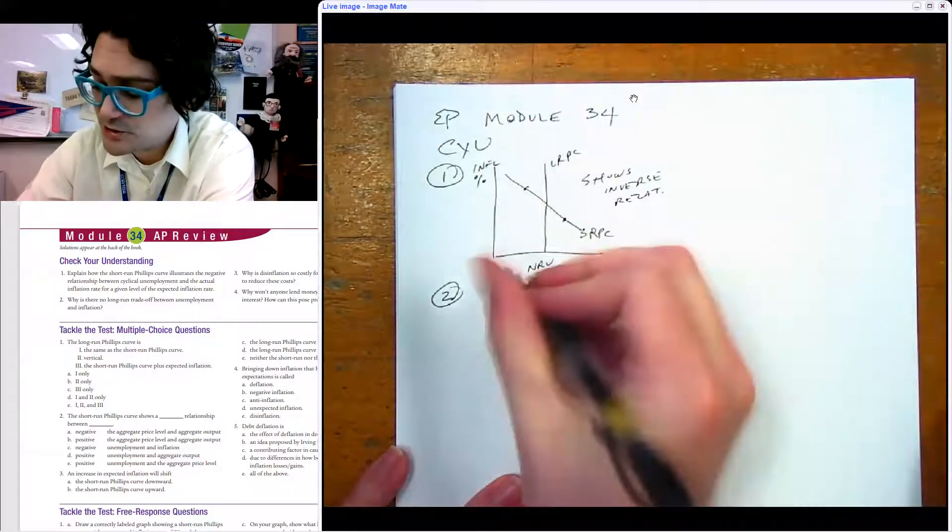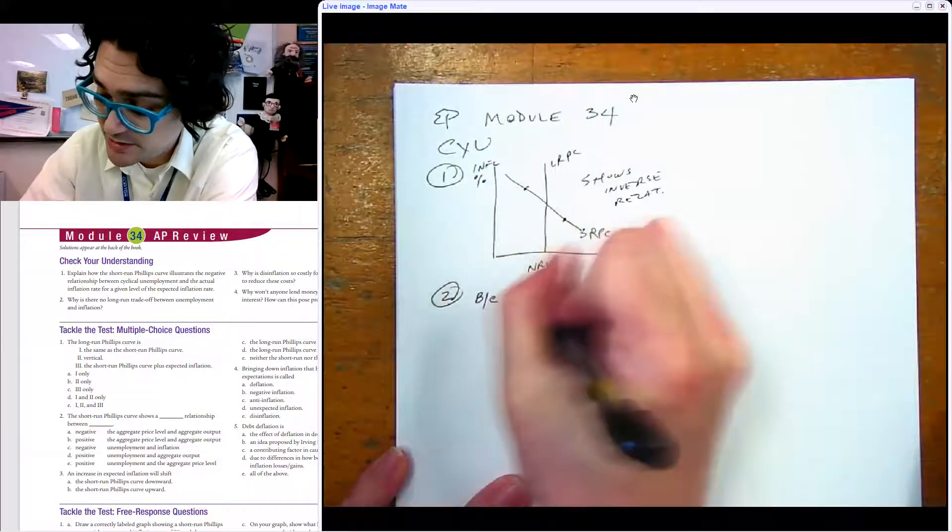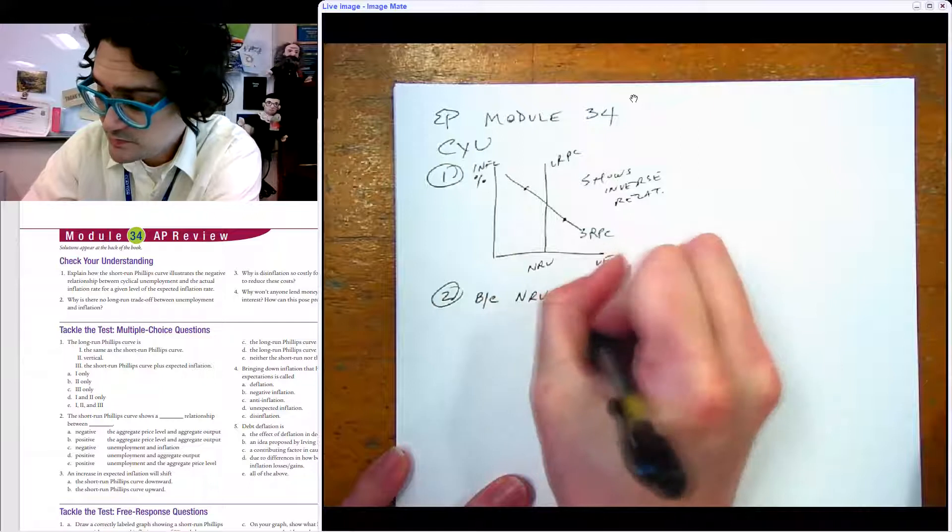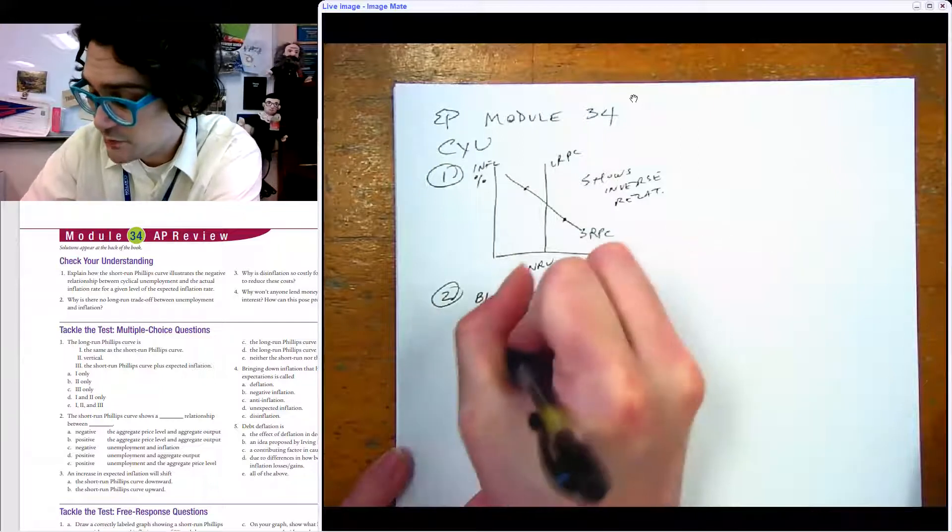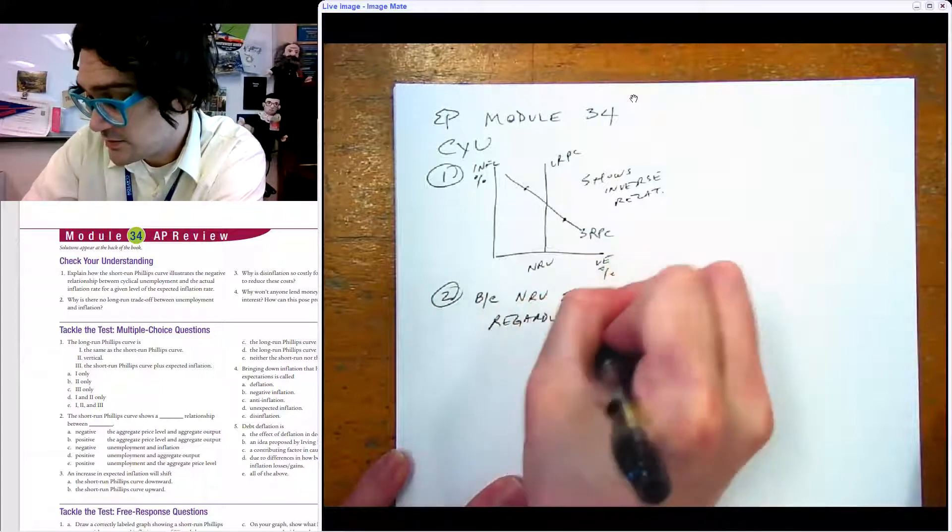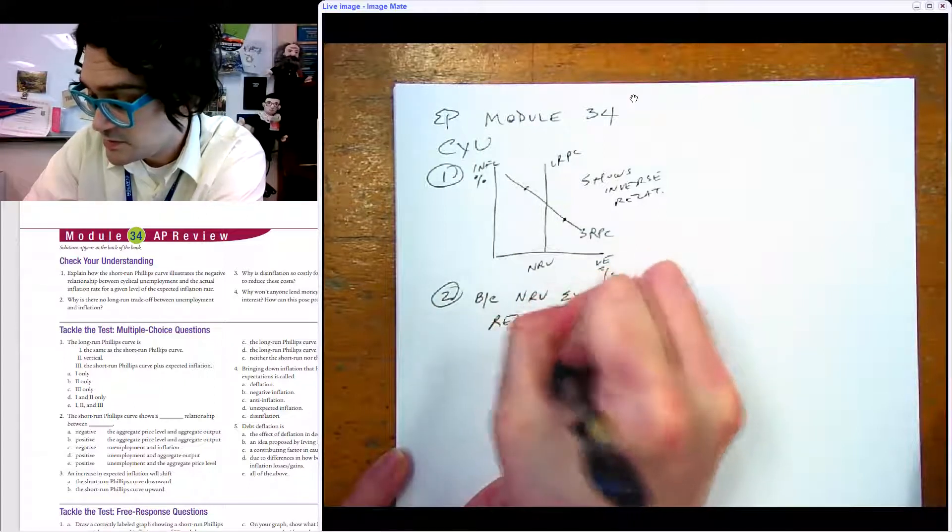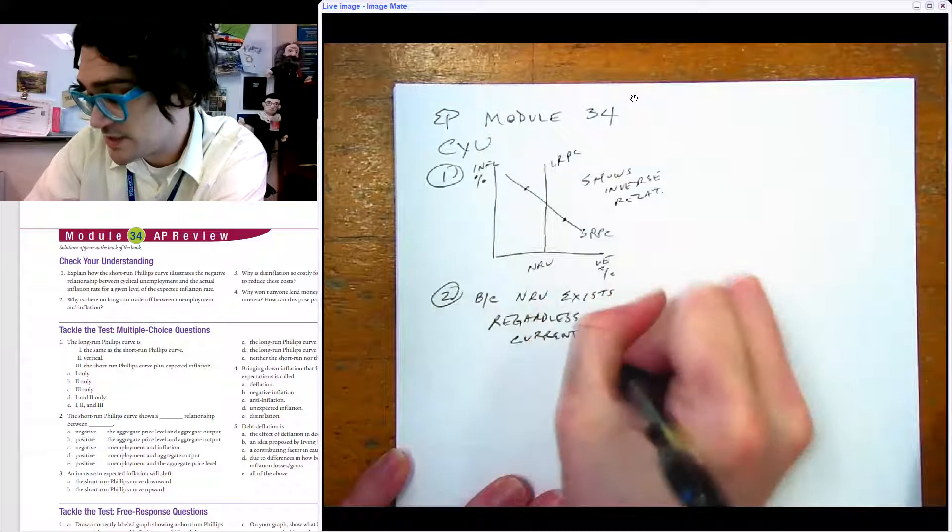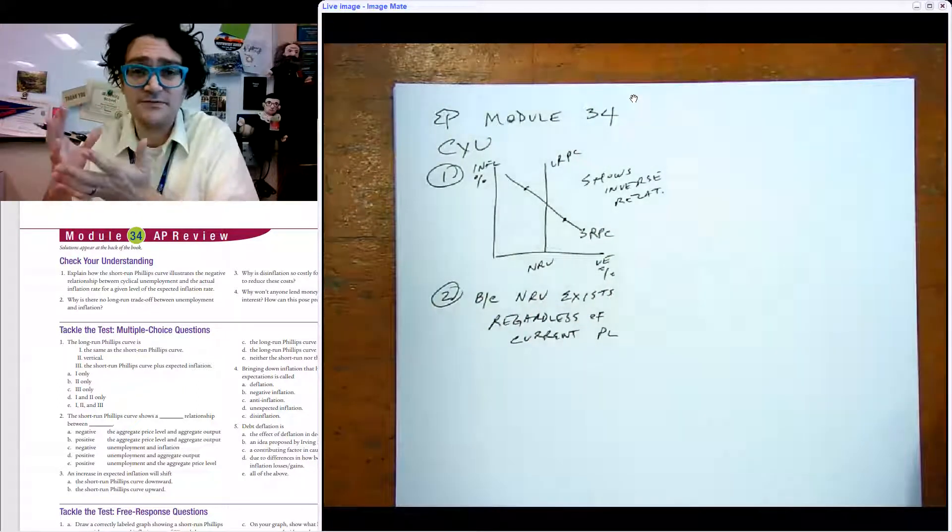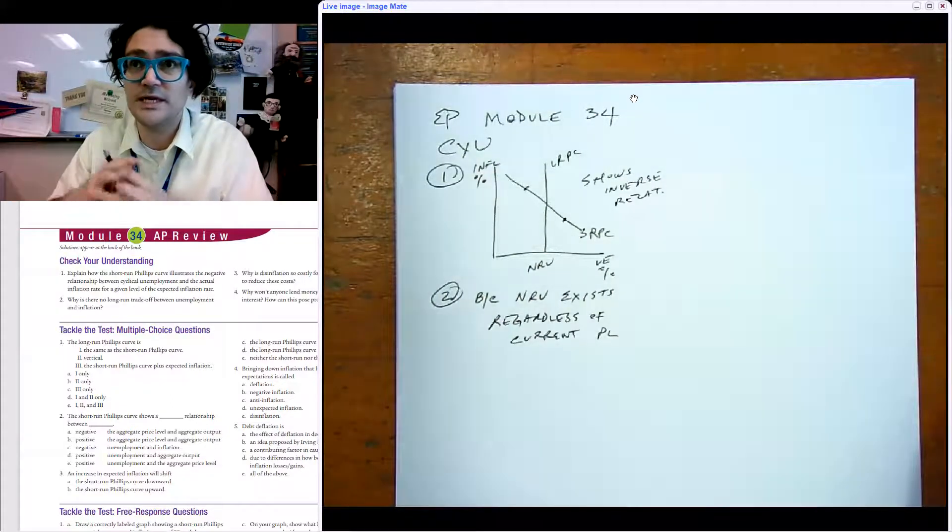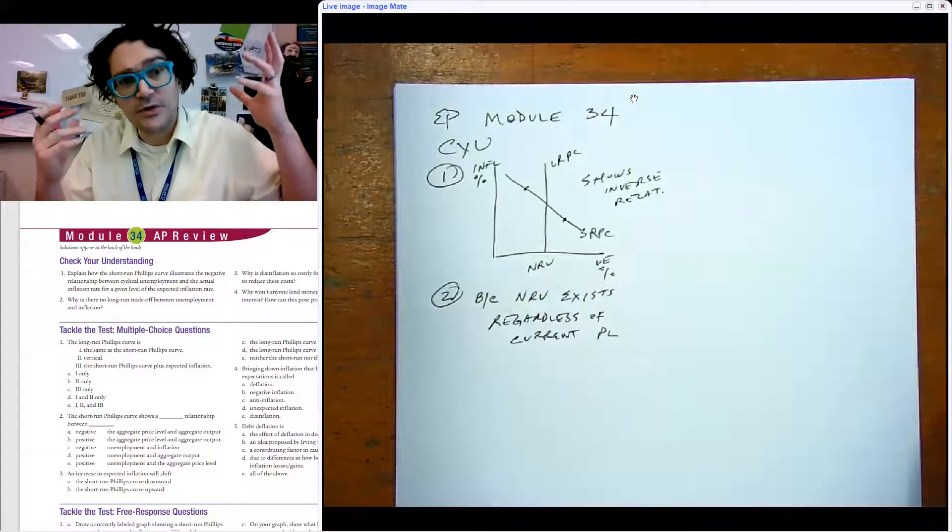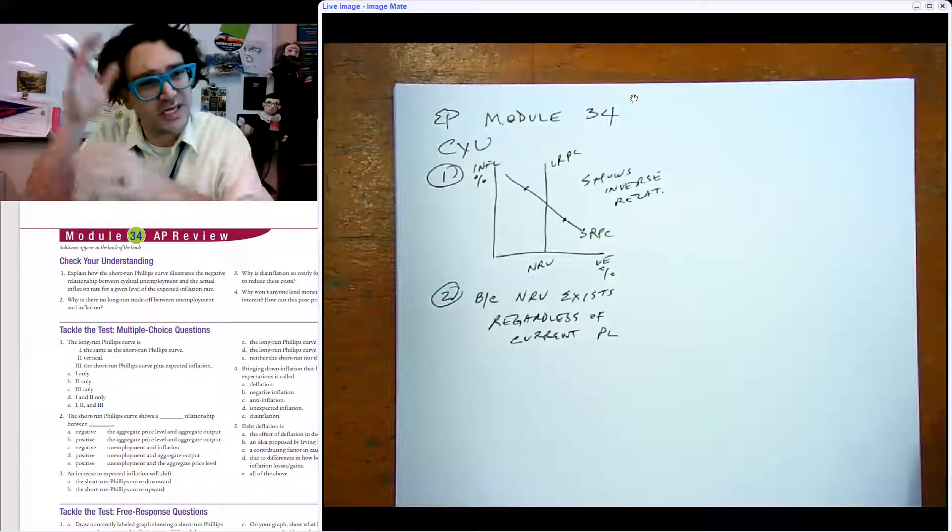Number two says why is there no long run trade-off between unemployment and inflation? The short answer is because the natural rate of unemployment exists regardless of current inflation or current price levels. No matter what, you're gonna have some natural level of unemployment of the structural and frictionally unemployed, and that's gonna happen no matter what the current level of inflation is.